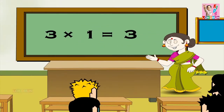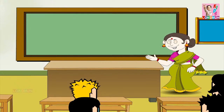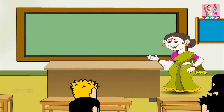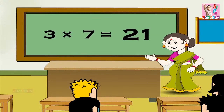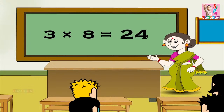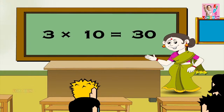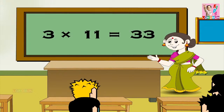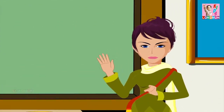Three ones are three, three twos are six, three threes are nine, three fours are twelve, three fives are fifteen, three sixes are eighteen, three sevens are twenty-one, three eights are twenty-four, three nines are twenty-seven, three tens are thirty, three elevens are thirty-three, and three twelves are thirty-six. And now children, it's your turn.